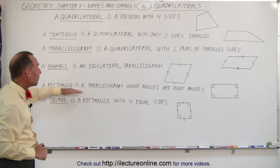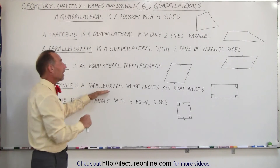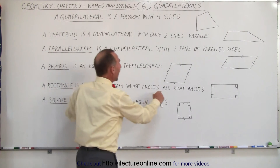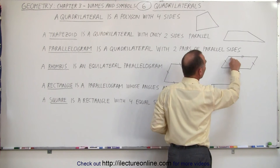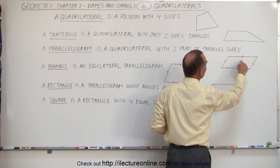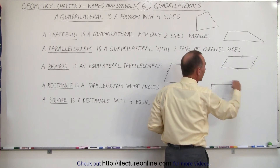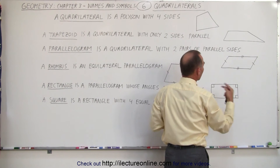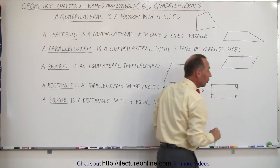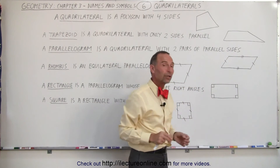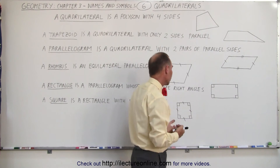A rectangle is a parallelogram, but with a special condition: all the angles are right angles. Notice that two angles of a parallelogram are obtuse and two angles are acute. When we go to a rectangle, that's no longer the case — all four corners, or all four angles, are equal to one another. They're all 90 degrees, therefore they're all called right angles.